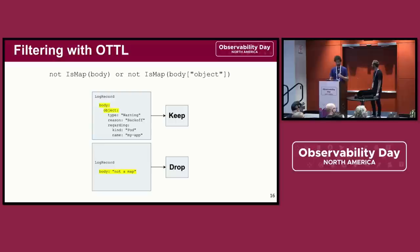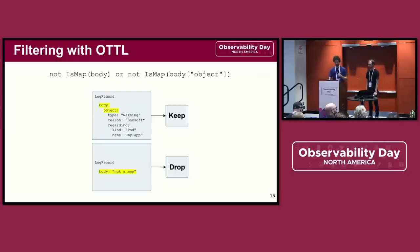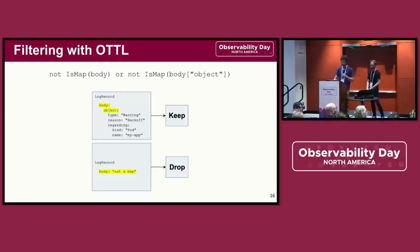In this scenario, we expect the K8s objects receiver to be emitting K8s events as logs, and those events are nested maps inside the body of the log. If we see a body that is not structured like we expect, we should drop it because it's not a K8s event. You can see in the first example that the body is a map and it contains a nested map in the object key — since the conditions are not met, the data is kept. In the second example, the body is a string, and since a string is not a map, the condition is met and the data is dropped.